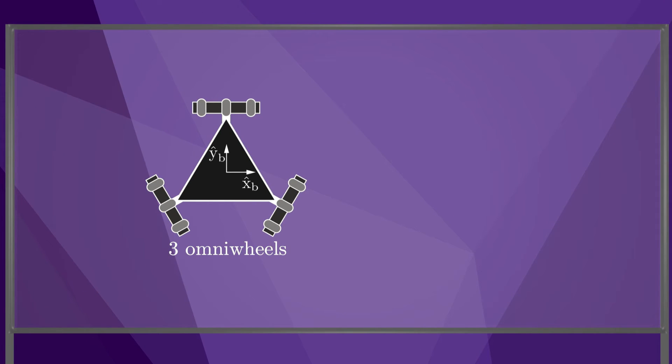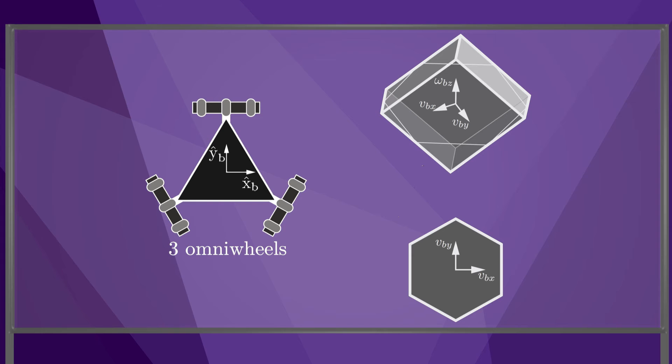For the omniwheel robot, there are three wheels, so the feasible twists live inside a six-sided polyhedron, as shown here. The intersection of this polyhedron with the plane of zero angular velocity is indicated, and also shown in the figure below. The feasible linear velocities are bounded by a hexagon.